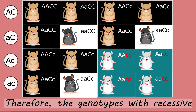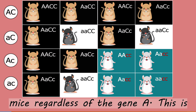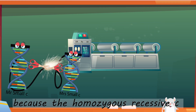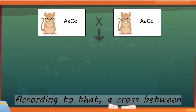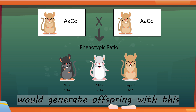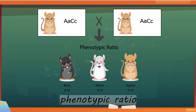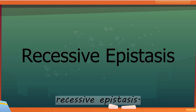Therefore, the mice with recessive homozygous A and at least one dominant C allele are black. The genotypes with recessive homozygous C gene will produce albino mice regardless of gene A. This is because the homozygous recessive C gene inhibits pigment production. According to that, a cross between heterozygous both genes would generate offspring with this phenotypic ratio. This phenomenon is known as recessive epistasis.